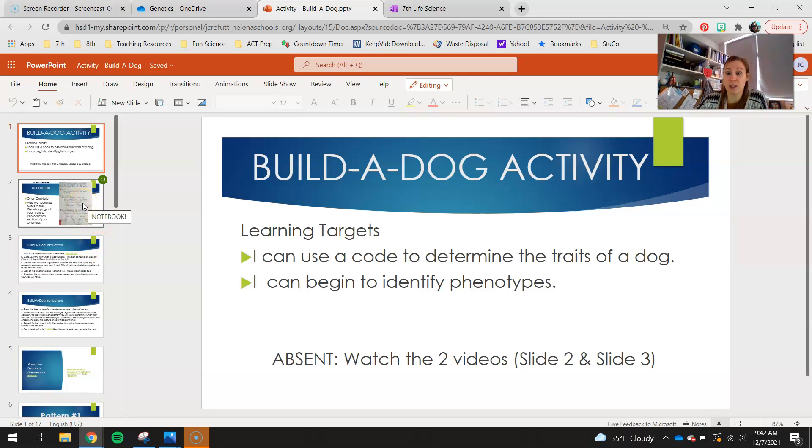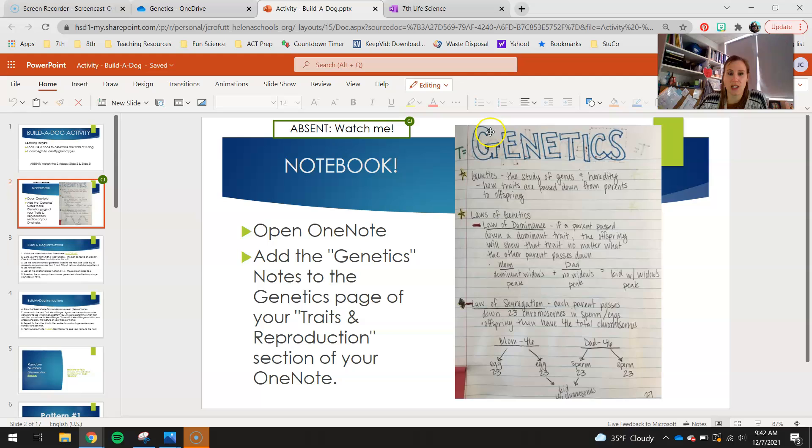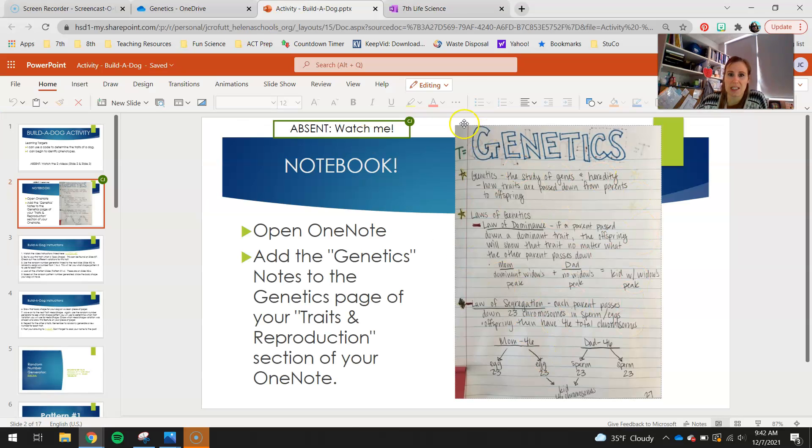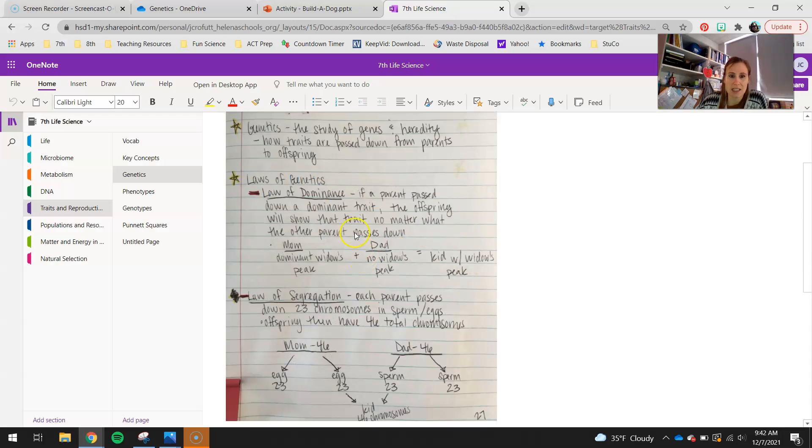First thing that you guys are going to do in this video is add your notes to your notebook. So, you guys should be going into your 7th Life Science One Notes. You guys should have already established a new section for this new unit, Traits and Reproduction. And you guys should have added these pages. Notice that we're working out of the genetics page today. So, go ahead and copy and paste this set of notes into your genetics page.